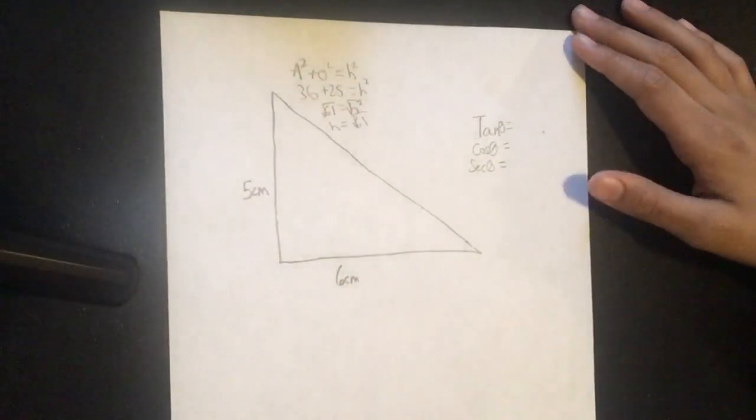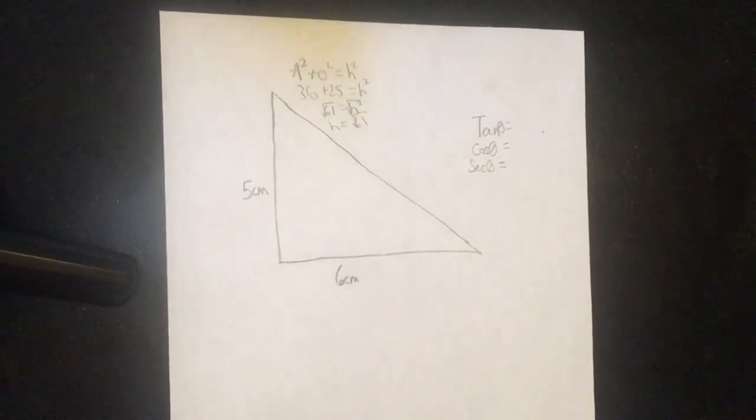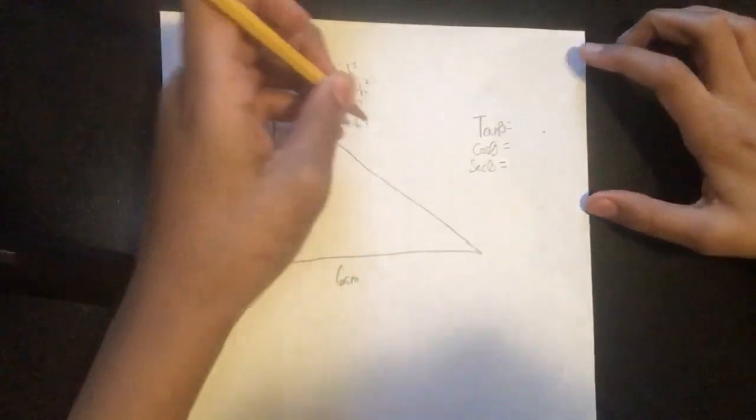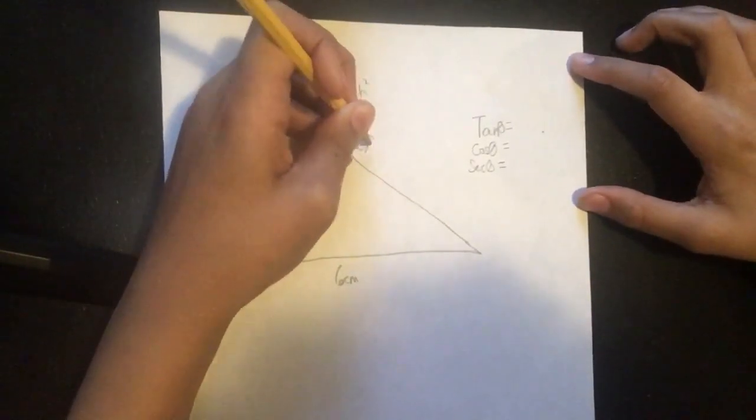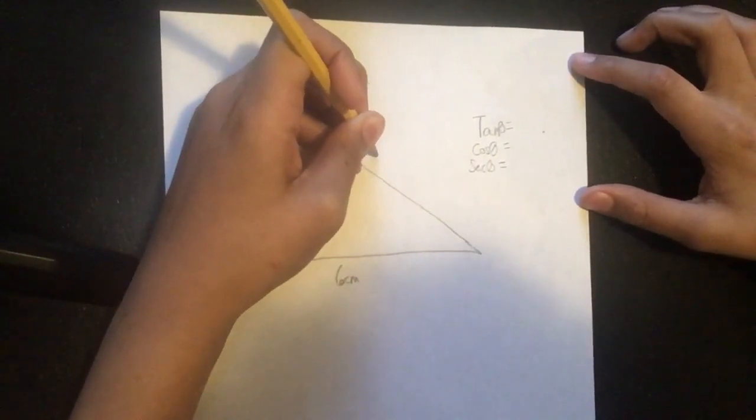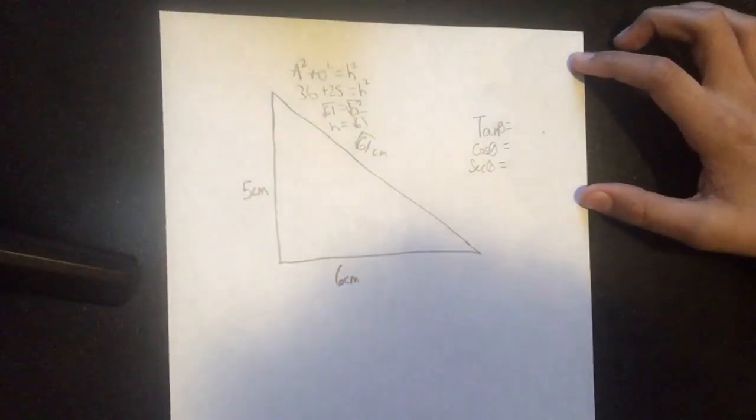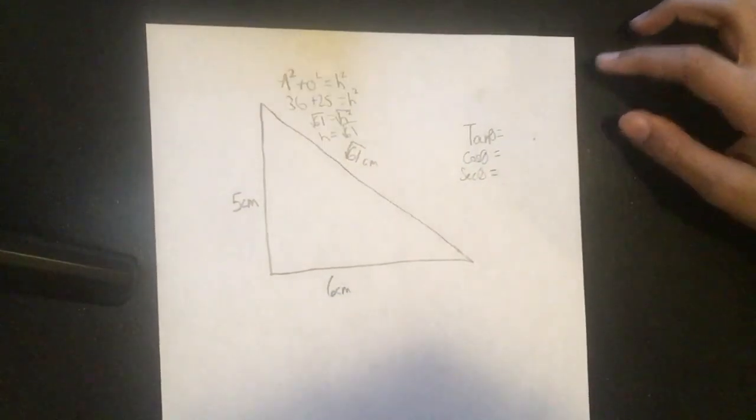All we have to do is use the square root and find that h equals the square root of 61. Since there isn't really an exact answer for the square root of 61, we can just use that for now, and we have the square root of 61 centimeters. Now, all we have to do is use the trigonometric ratios.